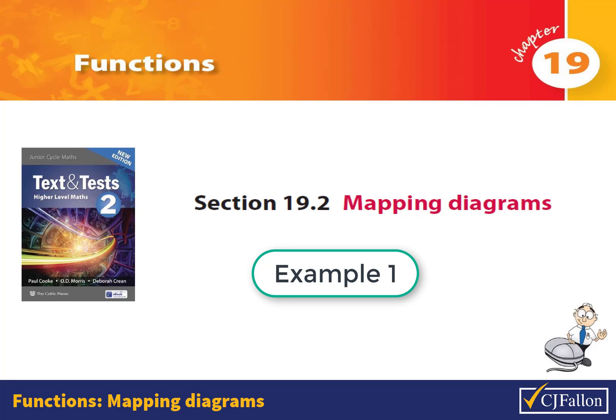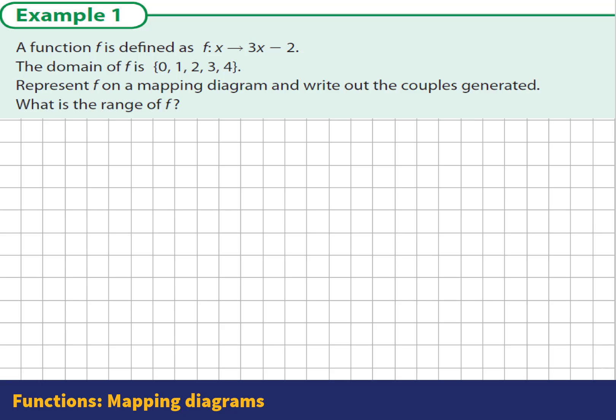Mapping Diagrams in Functions. Example 1. A function f is defined as f: x → 3x - 2. The domain of f is 0, 1, 2, 3 and 4.